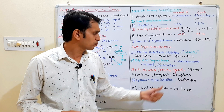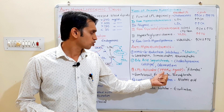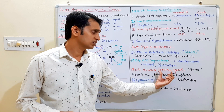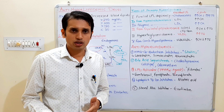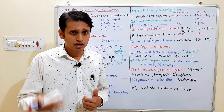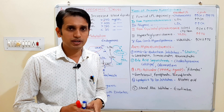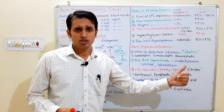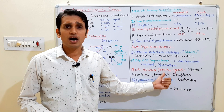Next are the LPL activators or PPAR-alpha agonists — peroxisome proliferator-activated receptor alpha. These molecules are responsible for increasing the LPL (lipoprotein lipase) enzyme activity in the blood and body. The drugs in this category are fibrates, such as gemfibrozil, fenofibrate, and bezafibrate.